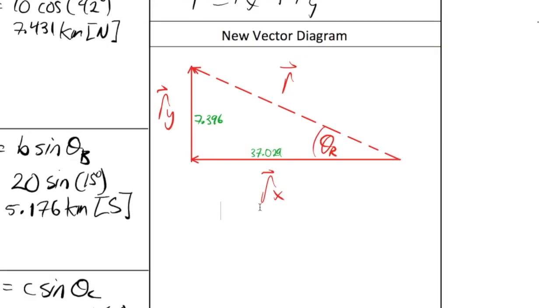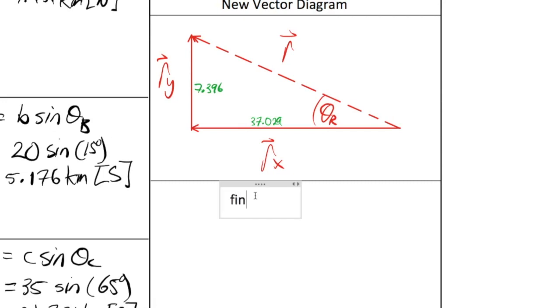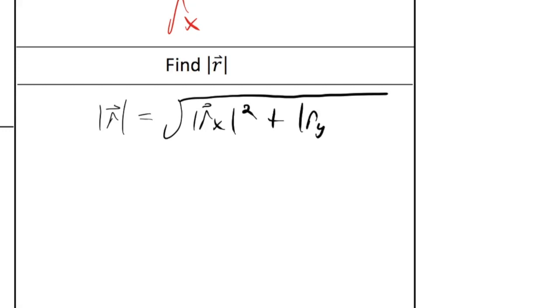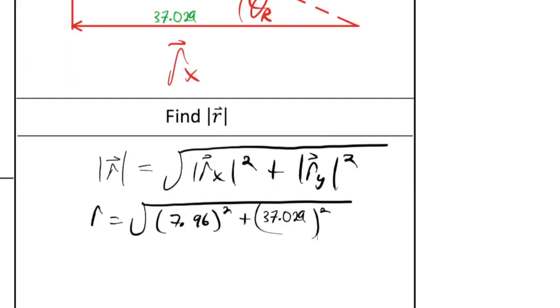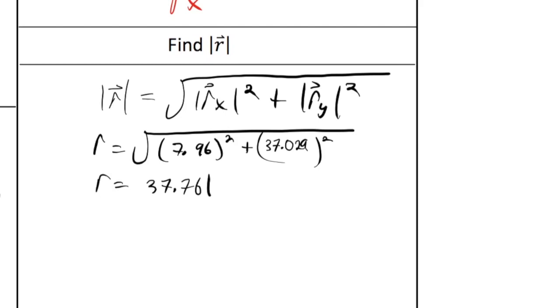And now to calculate the magnitude of the resultant, and then we have to find theta. So we're going to find the magnitude of vector R. So the magnitude of vector R is equal to the square root of the magnitude of RX squared plus RY squared. So R is equal to the square root of 7.96 squared plus 37.029 squared, which is 37.761 kilometers. Now, remember, we're going to eventually round this to the appropriate number of sig figs, which is four, but we'll do that after we find our angle.